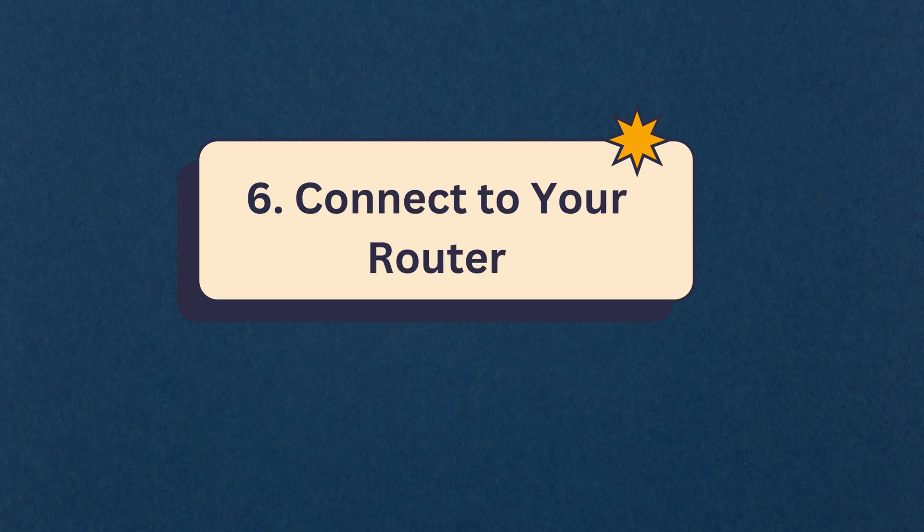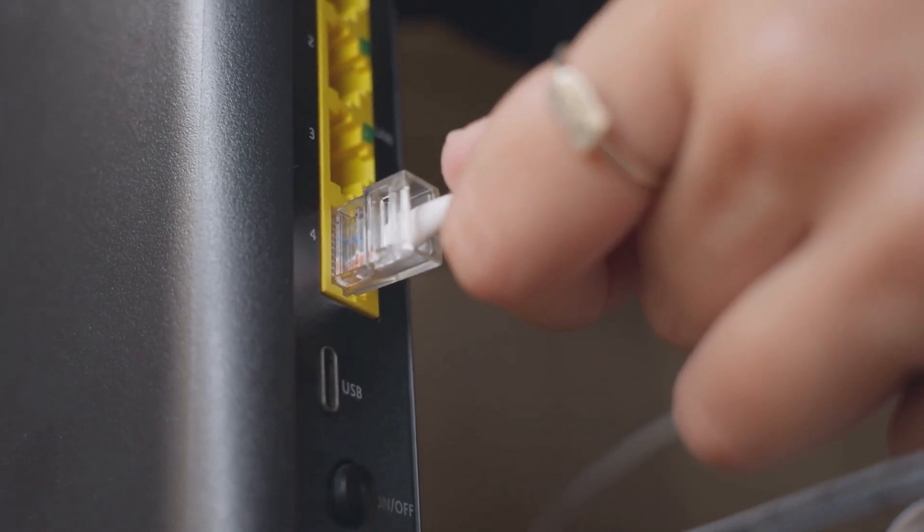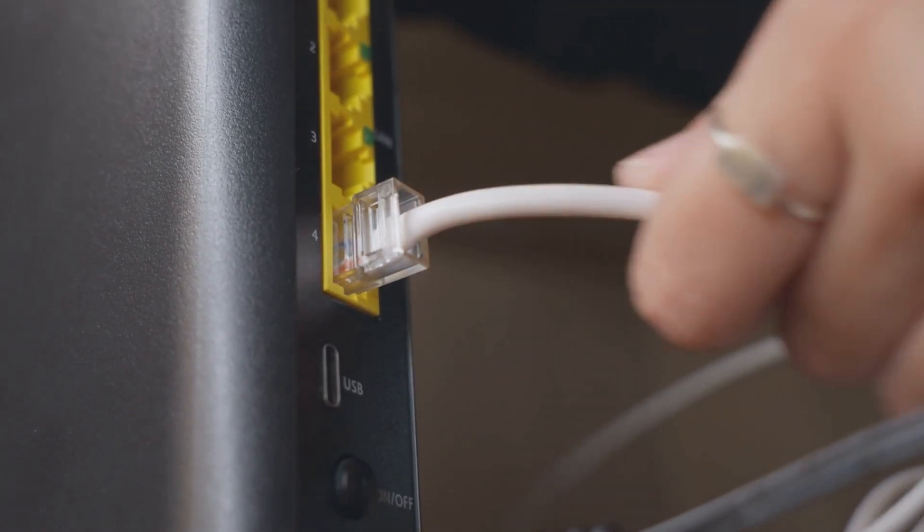Step 6: Connect to your router. Use an Ethernet cable to connect the modem's Ethernet port to the WAN or Internet port on your router.